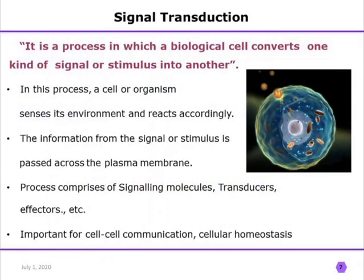Signal transduction is a process in which a biological cell converts one kind of signal or stimulus into another. In this process, a cell or organism senses its environment and reacts accordingly. The information from the signal or stimulus is passed across the plasma membrane. This process comprises signaling molecules, transducers, and effectors, and it is used for cell-to-cell communication, cellular homeostasis, and disease control.